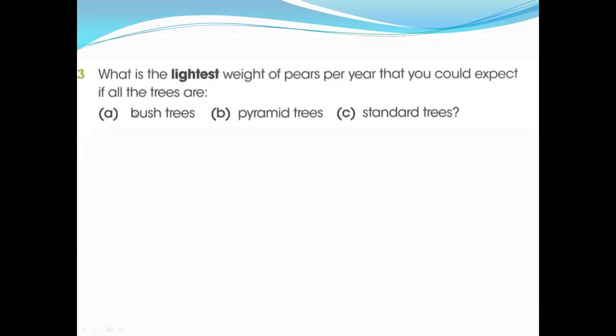Question 3. What is the lightest? Same like question 2. Lightest weight of pears per year that you could expect if all the trees are bush trees. Easy. Same like this. You need to multiply 24 with the lightest weight, not the heaviest weight. 20 multiply 24, 480 kg. Pyramid same like this, 171 multiply 30. This is the lightest weight. Again I am telling you, you are multiplying with lightest weight. 171 multiply 30. 7 threes are 21, 1 here to carry. 3 ones are 3, 4, 5, 513. You can multiply it by yourself. Because of time I can't show here multiplication. And standard, 40 multiply by 8. 8 multiply by 4, 32, and 0 bearing down. 320 kg.